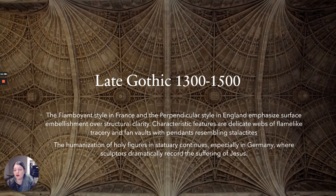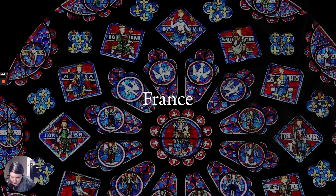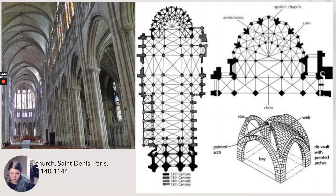In sculpture during the Late Gothic, the humanization of holy figures in statuary continues even further, especially in Germany, where sculptors dramatically record the suffering of Jesus. There are pretty big changes across this period. Today we're going to talk a lot about France — here we have the rose window of Chartres.